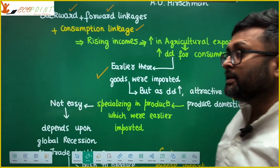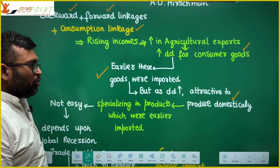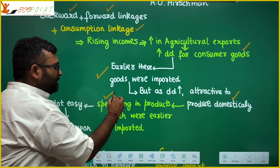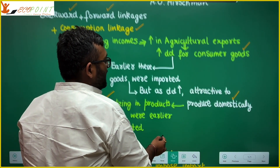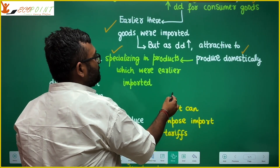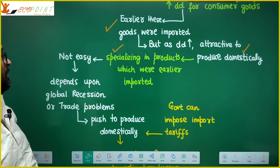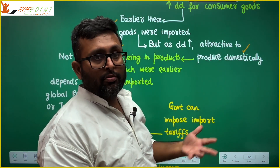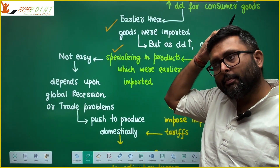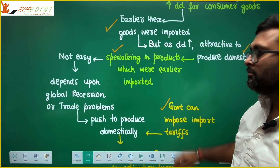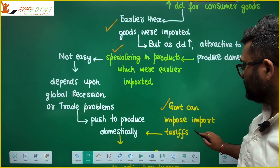As demand increases, it becomes very attractive to produce these consumer goods even in my own country. So these countries also start specializing in the products which they were importing earlier — they have started producing domestically and have also started exporting them. But do you think that all of this is so easy? Import substitution is not so easy.